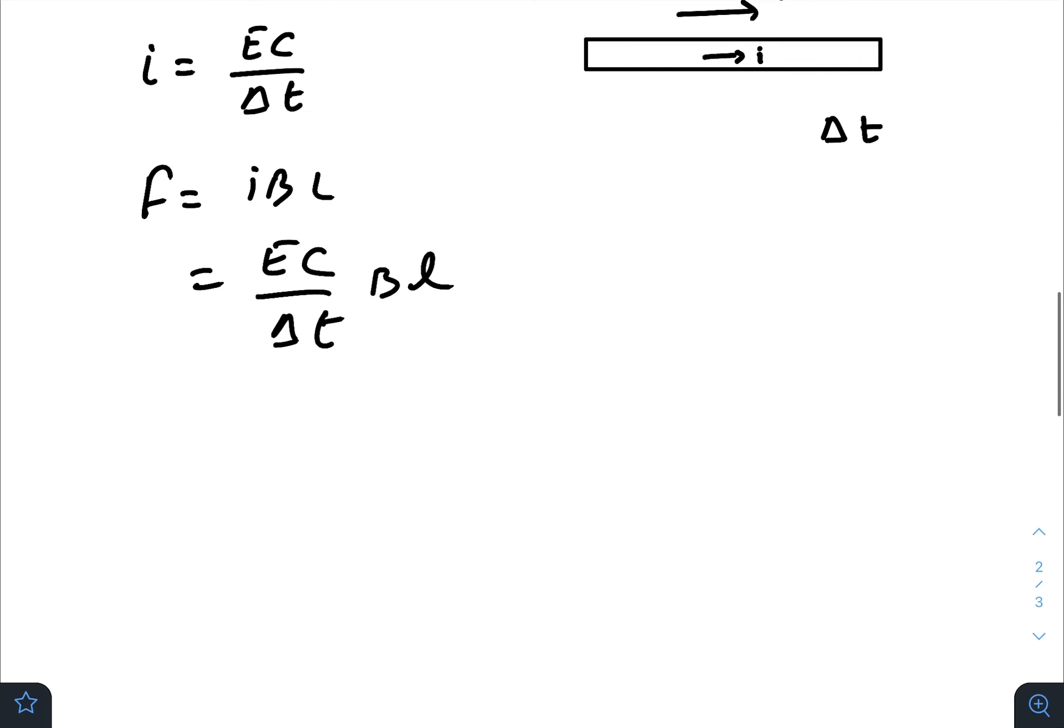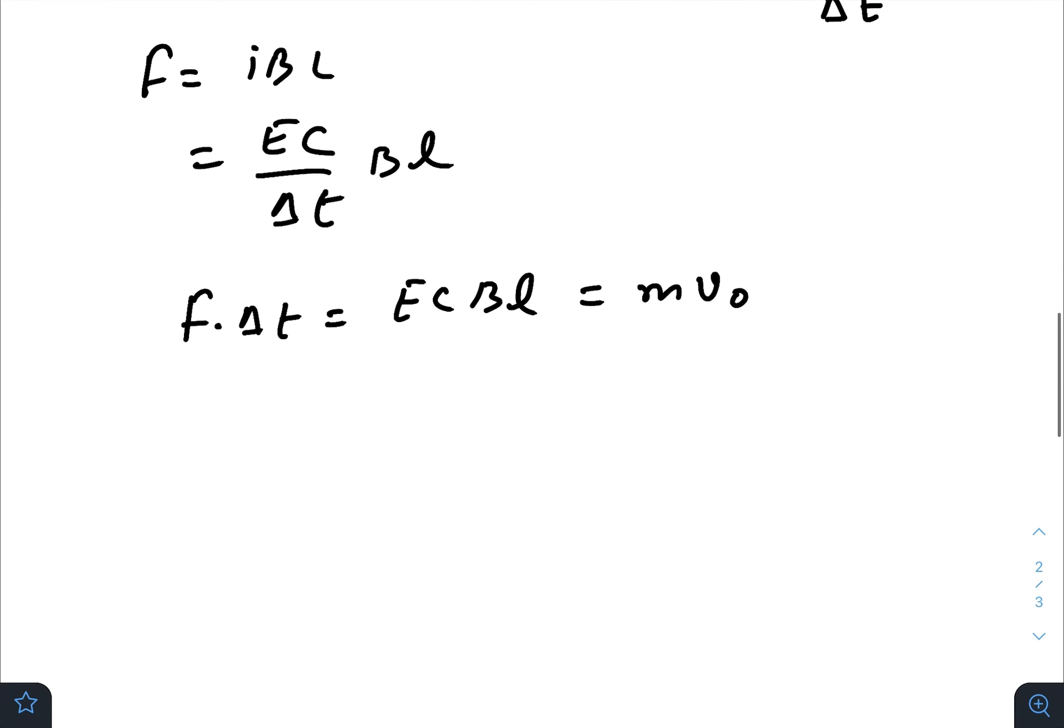How do we find v naught? Let us draw the rod once again. There is a certain amount of flow of charge of value E times C for a short interval of time, let that interval be del t. This creates a sharp pulse of current of this much amount. Due to the flow of this current, there will be a force on the rod due to the magnetic field, and that force would be i B l, that is EC by del t times B l. This force will generate an impulse of f times del t, which is E C B l. This increases the momentum from 0 to m v naught, so v naught equals E C B l divided by m.